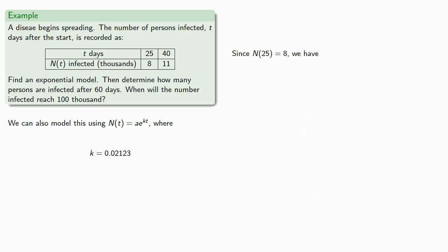Now, since we know that N(25) is equal to 8, we can substitute these in to find our value for a. And this time our value of a is very different. And that's because we've incorporated this translation into that factor.